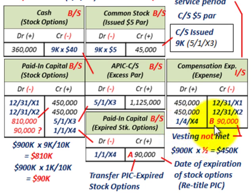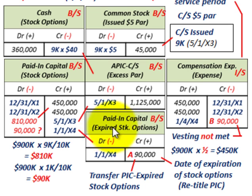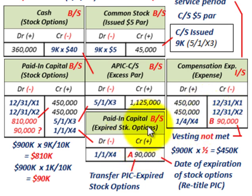The key difference: when vesting requirements aren't met, you reduce your compensation expense on the income statement. When stock options actually expire because the employee chose not to exercise them, you simply transfer the amount from paid-in capital for stock options into another equity account — paid-in capital for expired stock options — on the balance sheet. One affects the income statement; the other stays entirely within equity.